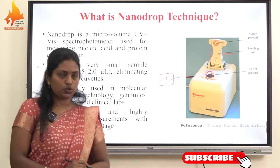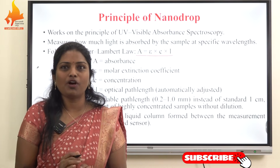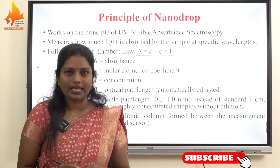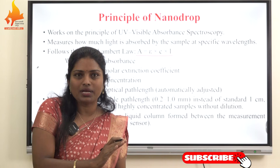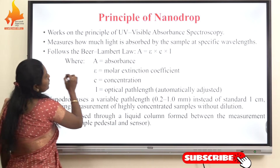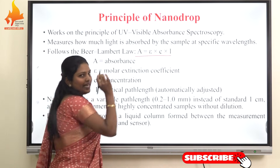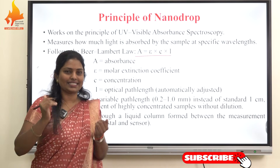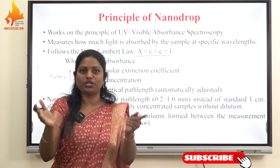The nanodrop operates on the principle of UV-visible absorbance spectroscopy, which measures the absorption of light by biomolecules at specific wavelengths. This principle is governed by the Beer-Lambert law, which establishes a linear relationship between absorbance and concentration. The equation is: A = ε × C × L. As concentration increases, the absorbance of the sample also increases — that is, absorbance is directly proportional to concentration.